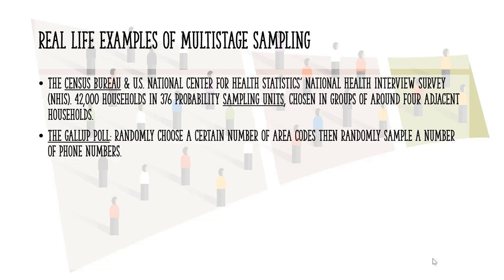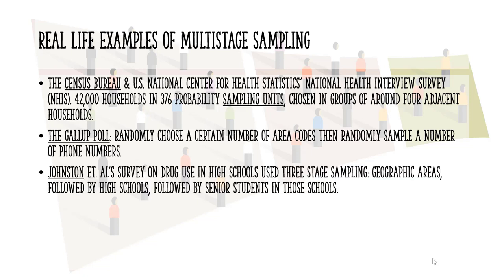A Gallup poll uses multi-stage sampling. For example, they might randomly choose a number of area codes, then randomly sample a number of phone numbers from within each area code. Johnson and colleagues' survey on drug use in high schools used three-stage sampling: geographic area, followed by high schools within those areas, followed by senior students in those schools.